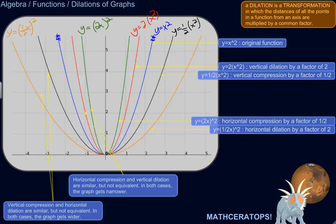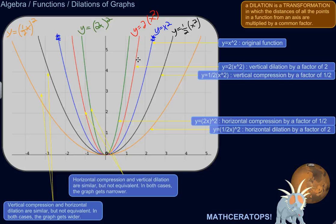What I did was I created a graph of a function, y equals x squared, and then I showed it with every kind of dilation or compression — vertical dilation, vertical compression, horizontal dilation, horizontal compression. I'll show you how each one is related to the others and how they all work. Then I'm going to make some observations about why it can be confusing to pick them out. Y equals x squared is the original function; everything else is a dilation or compression of that original function.